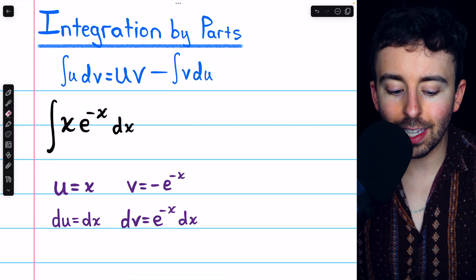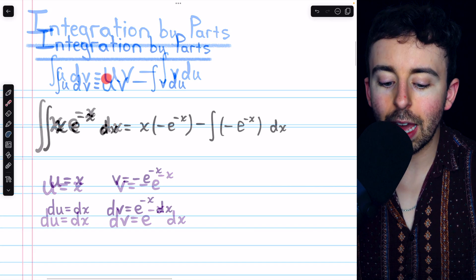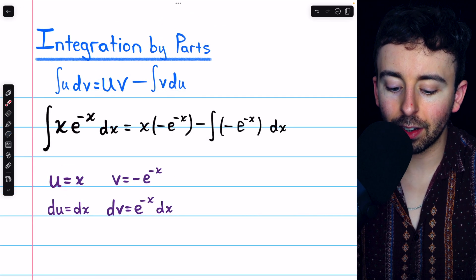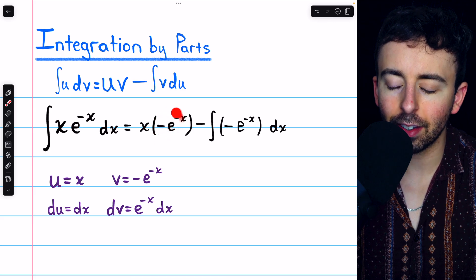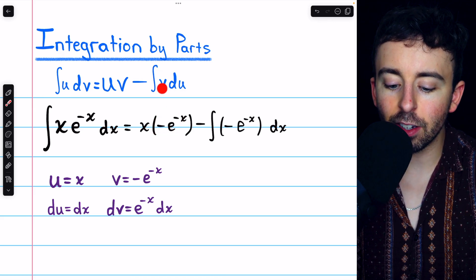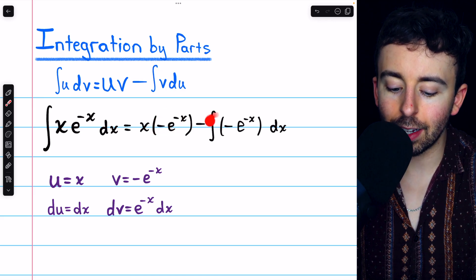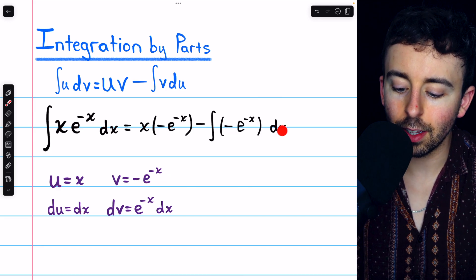Now that we have our pieces, we can apply the integration by parts formula. We have u times v, so x times negative e to the negative x, seen there, minus the integral of v du.